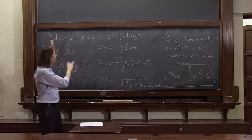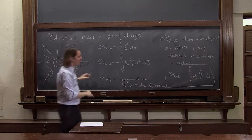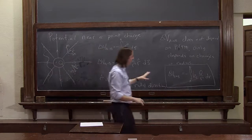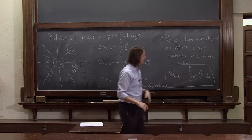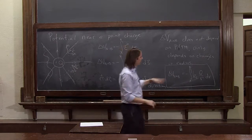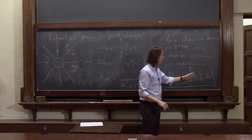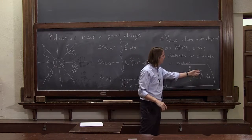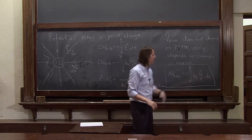So there, finally, we've done what we said we were going to do: the potential near a point charge. It's minus the integral from a to b of k — Coulomb's constant — times q over r squared, dr.